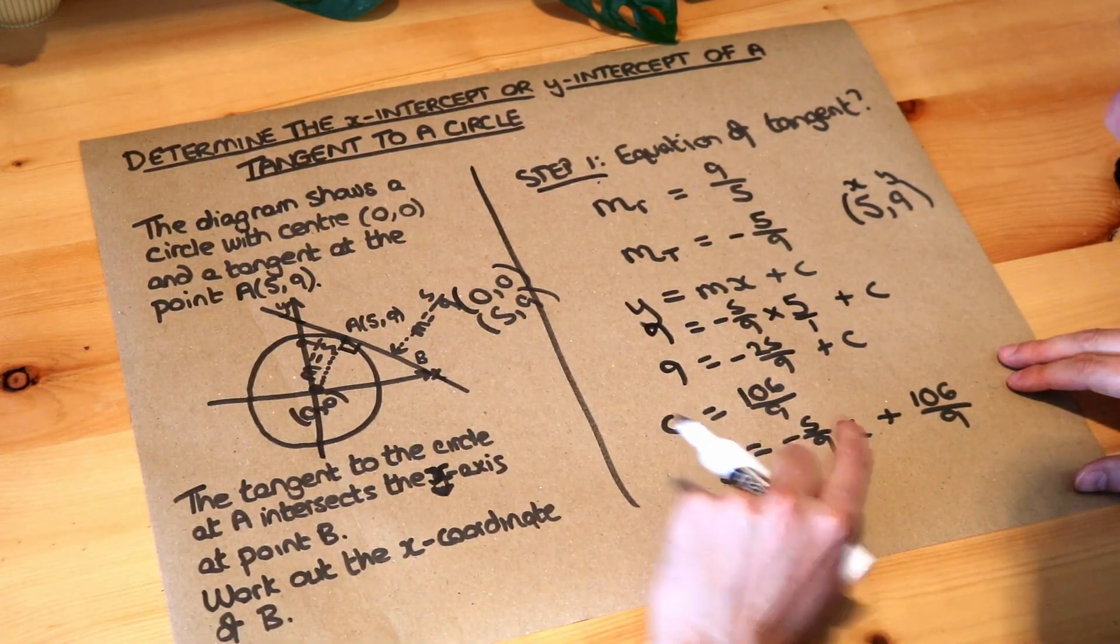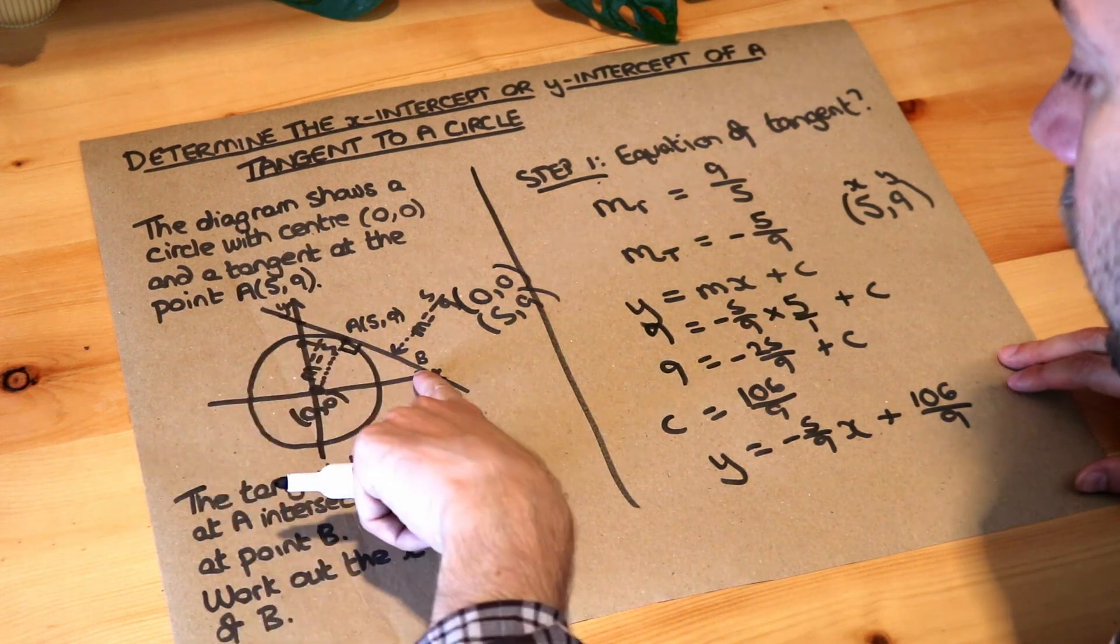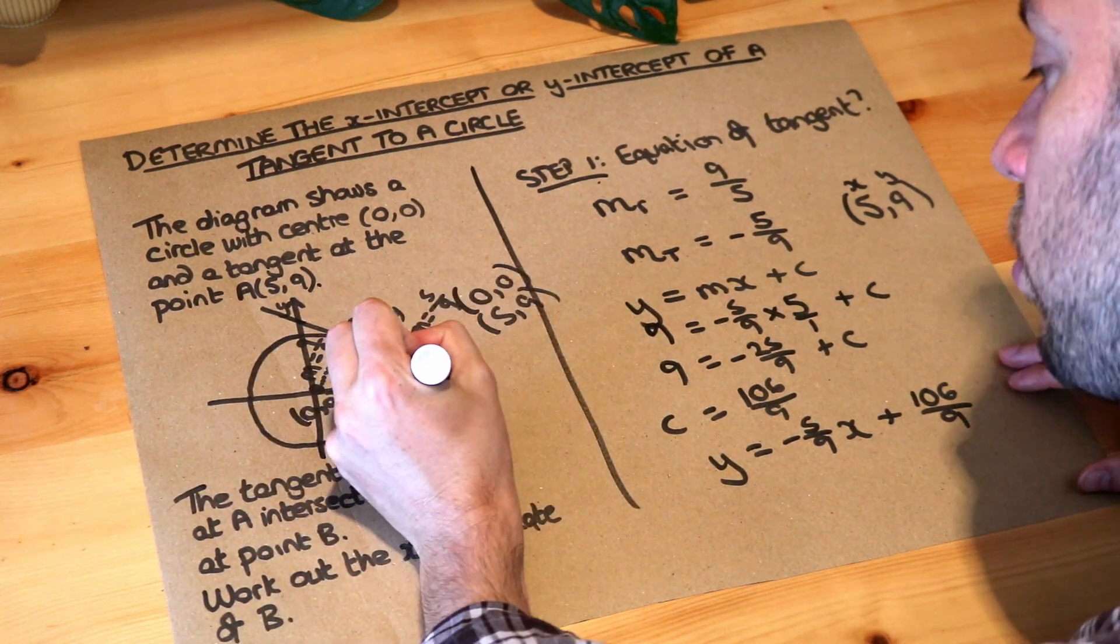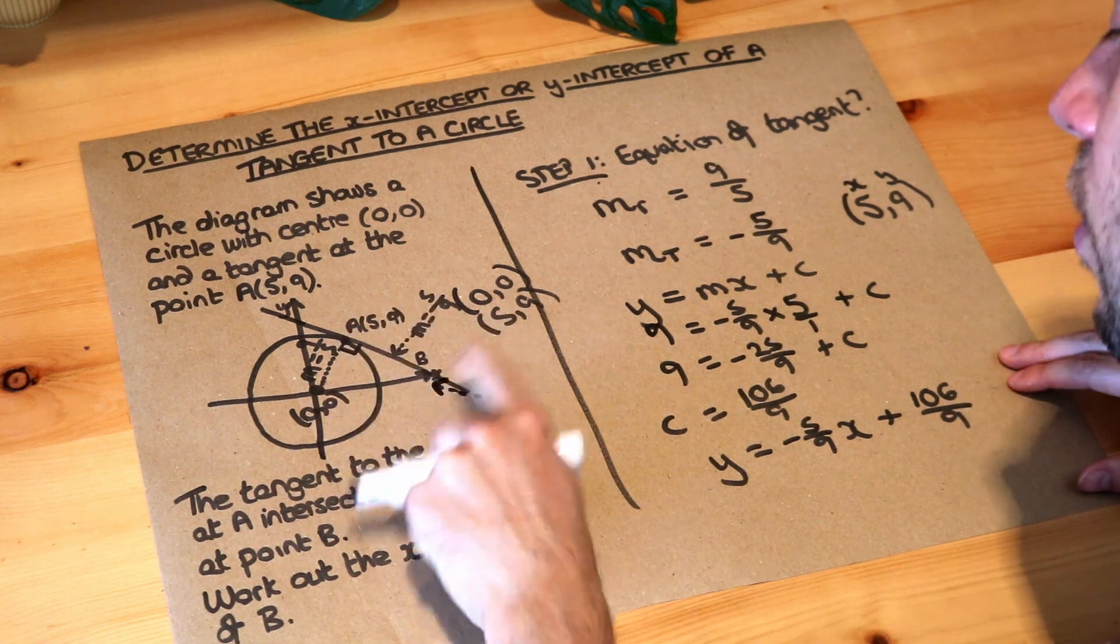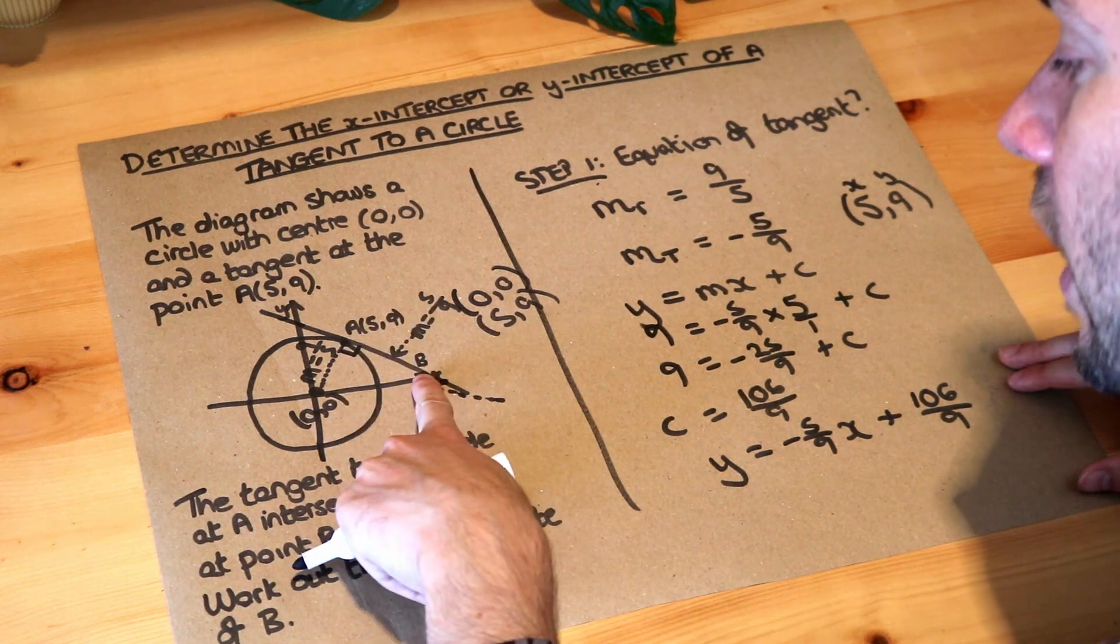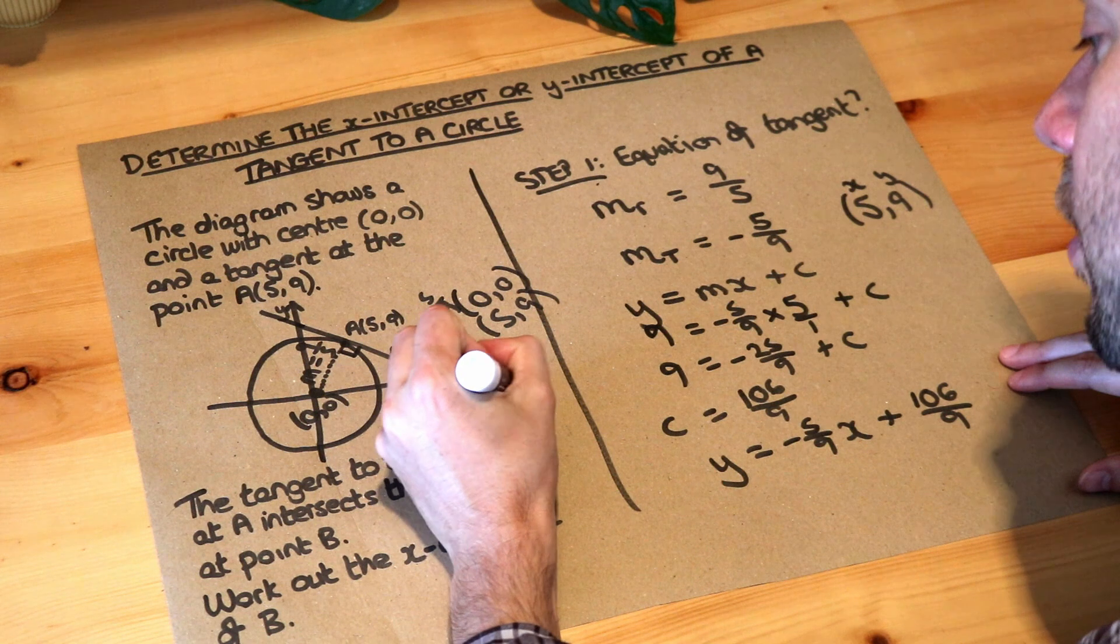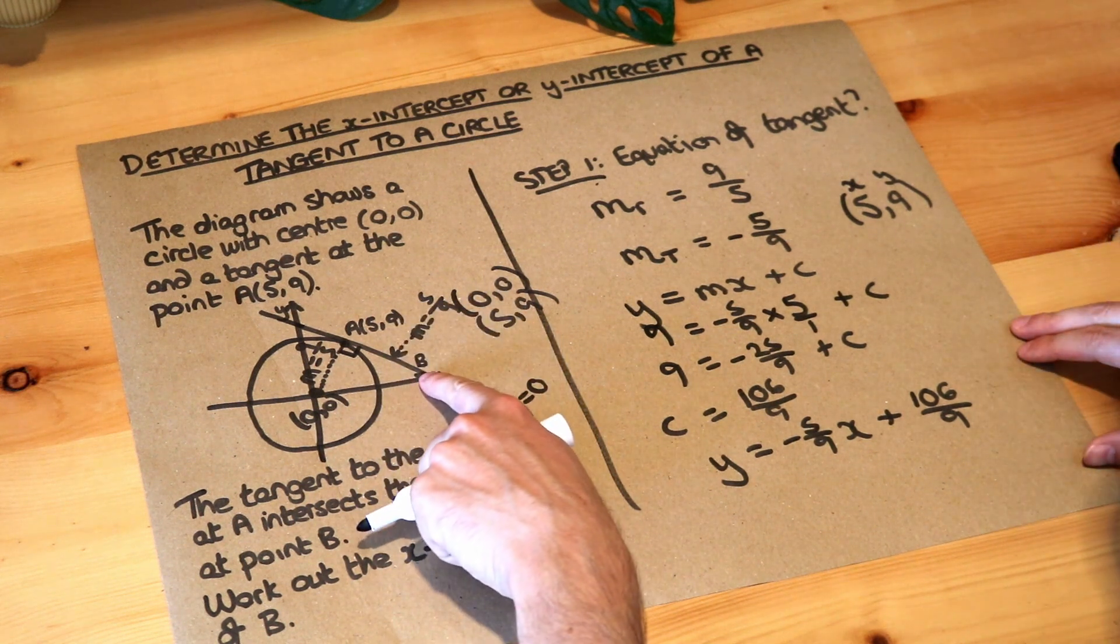Now, we'll either be asked to find the y-intercept, which is here, or the x-intercept, which is here. Now, what do we know about an x-intercept? Well, we can see at this point, the y-value is 0. When we're on the x-axis, the y-value is 0.